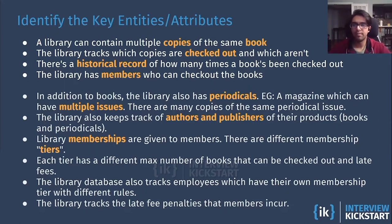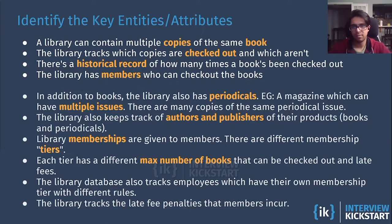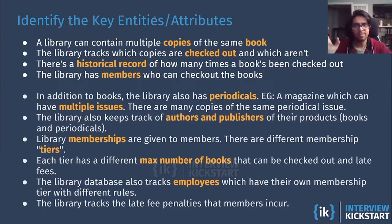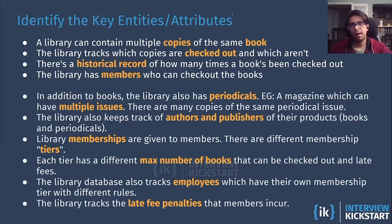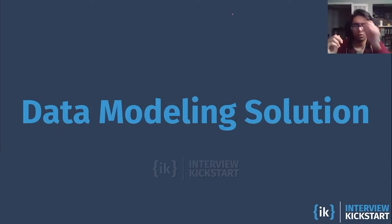Periodicals with multiple issues — likely the same design as the book. The library keeps track of authors and publishers — those are sort of like dimension entities that are probably going to join to a book or a periodical so I can see how many times they've published or written something. Memberships are given to members with different membership tiers — this is probably a dimension thing that joins to some member entity, and that's where I'm going to get those rules we mentioned — like max number of books, late fees, and so on. We'll likely have an entity for employees that also has joins to that membership tier dimension, and the late fee penalties. So I've sort of broken down my requirements and I now have an idea of what the joins and entities are going to be. Now I'm basically ready to step into the data modeling solution.